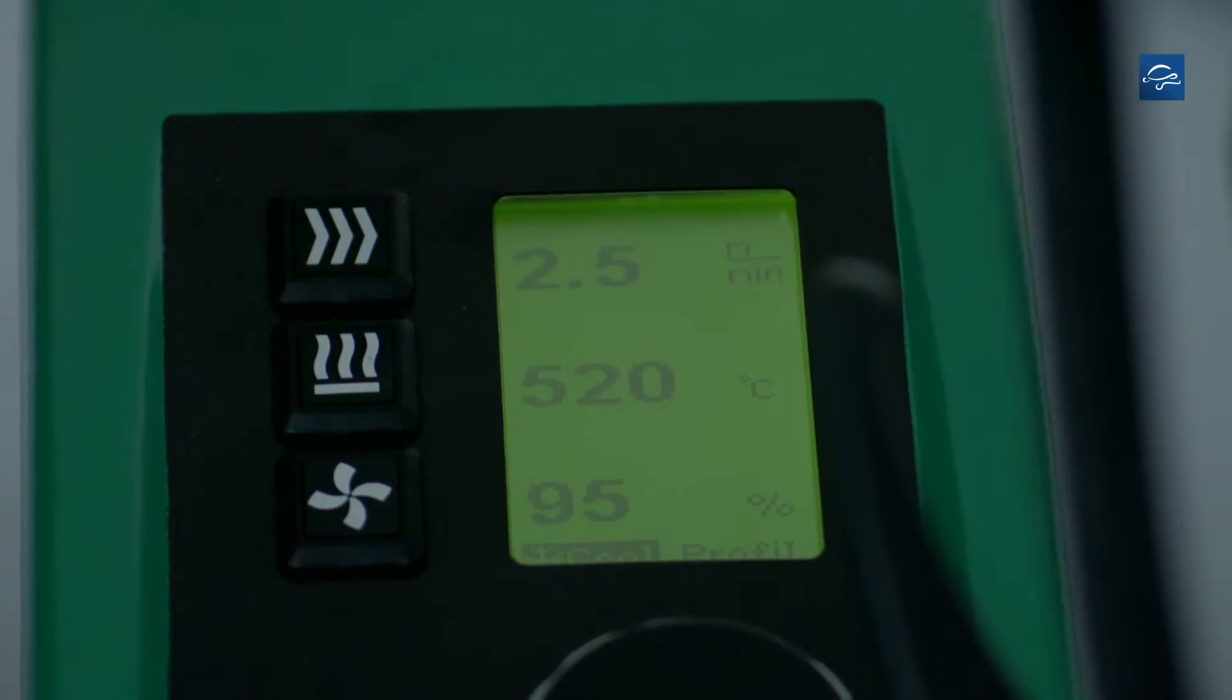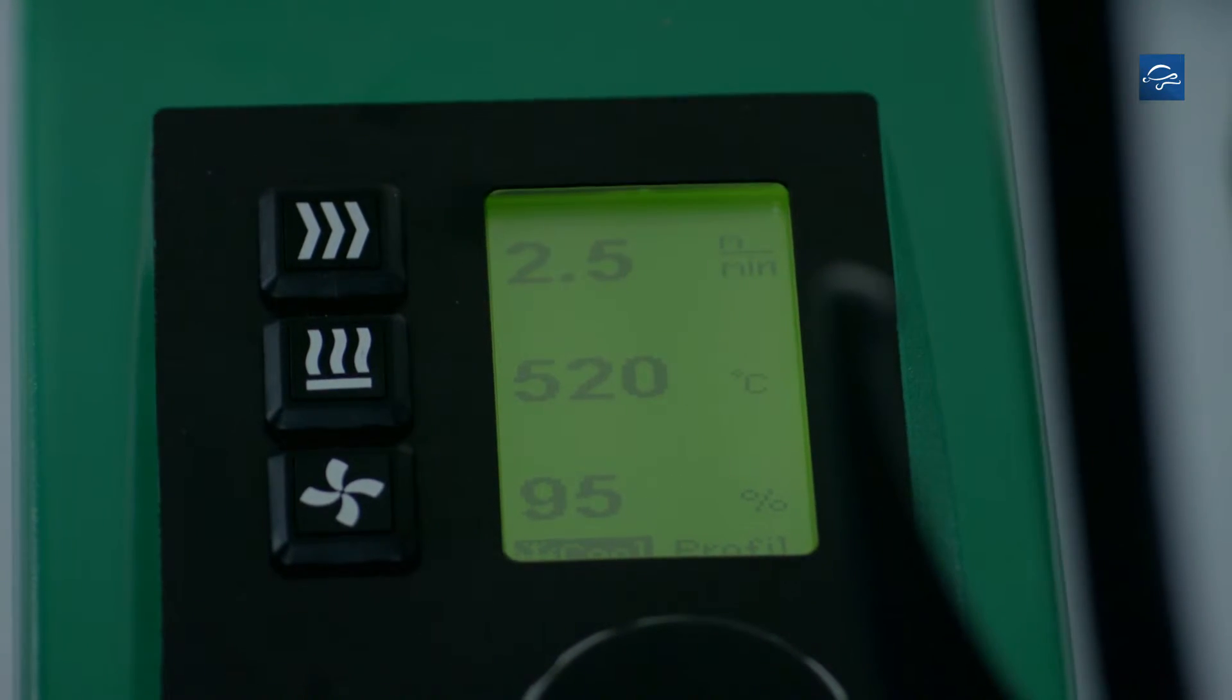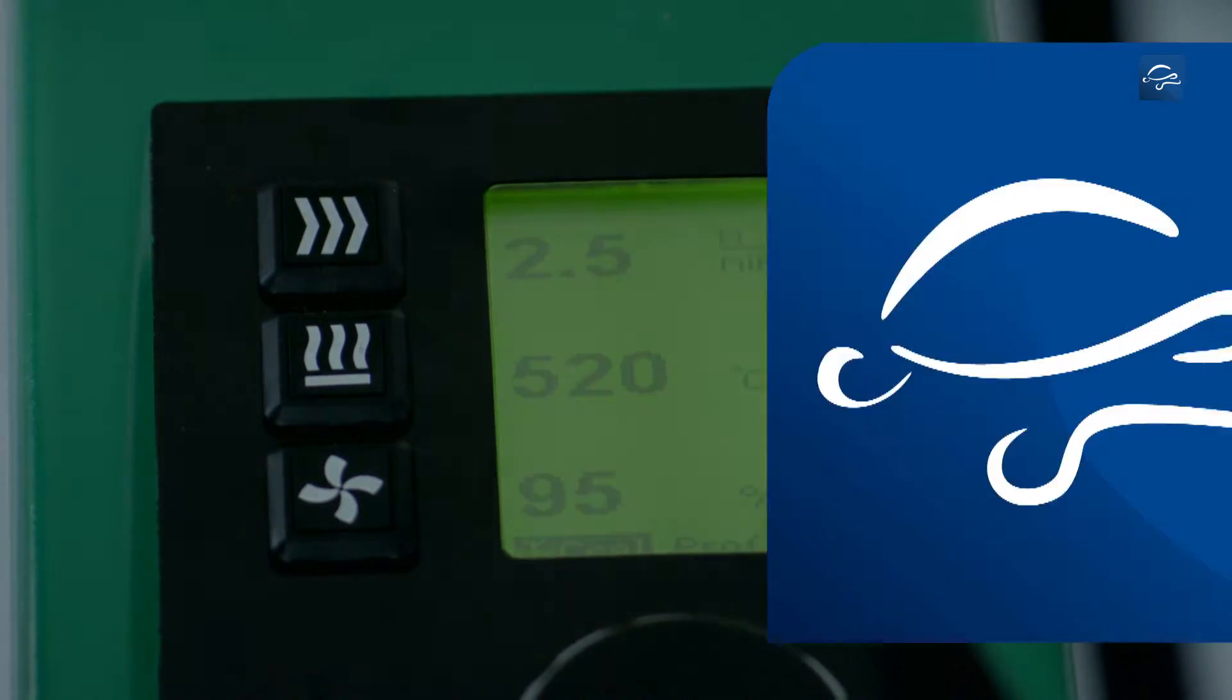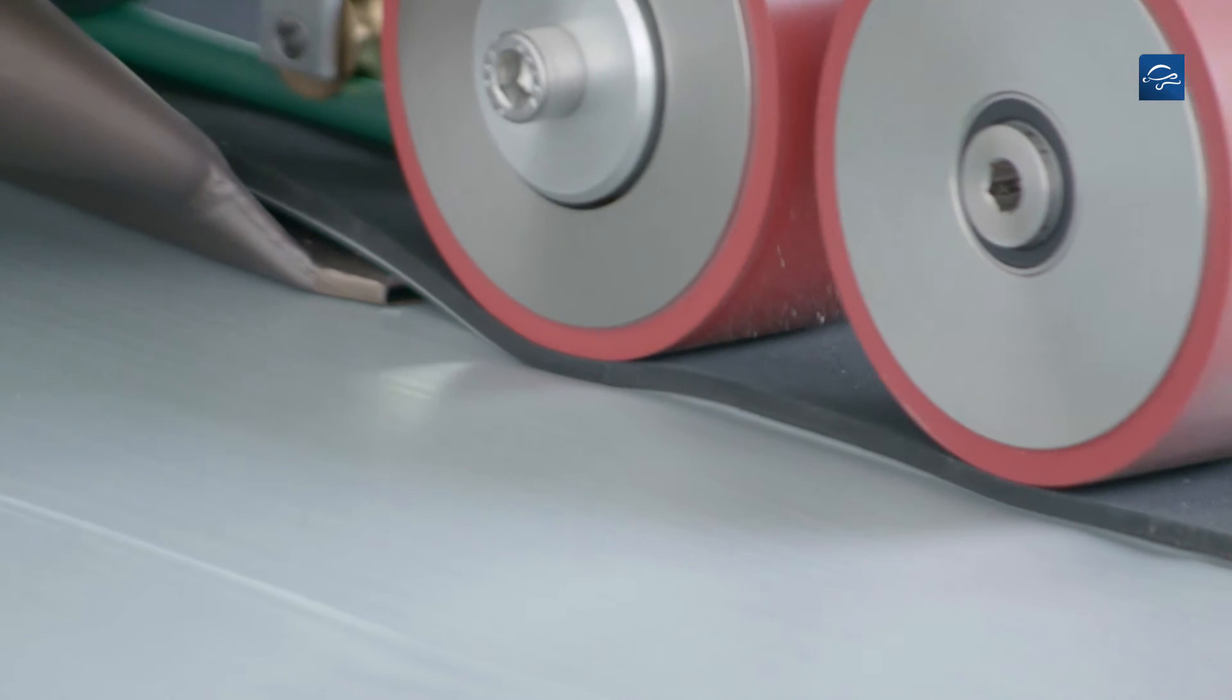For Rhepanol FK Roofing Membranes with welding edge, the hot air welding machine should be set to approximately 520 degrees centigrade and a working speed of approximately 2.5 m per minute.